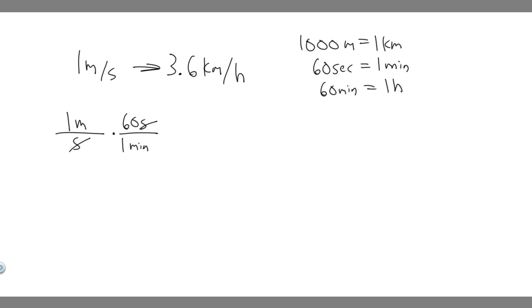We want kilometers per hour, so now we convert from minutes into hours. We know there are 60 minutes for every one hour. The minutes cancel, and now we have it in meters per hour.